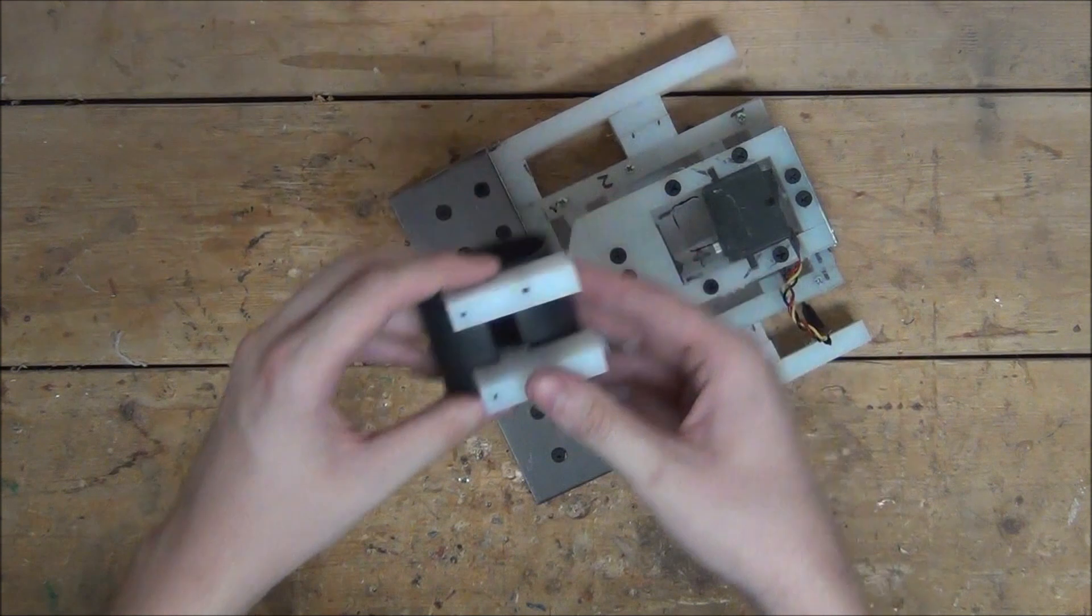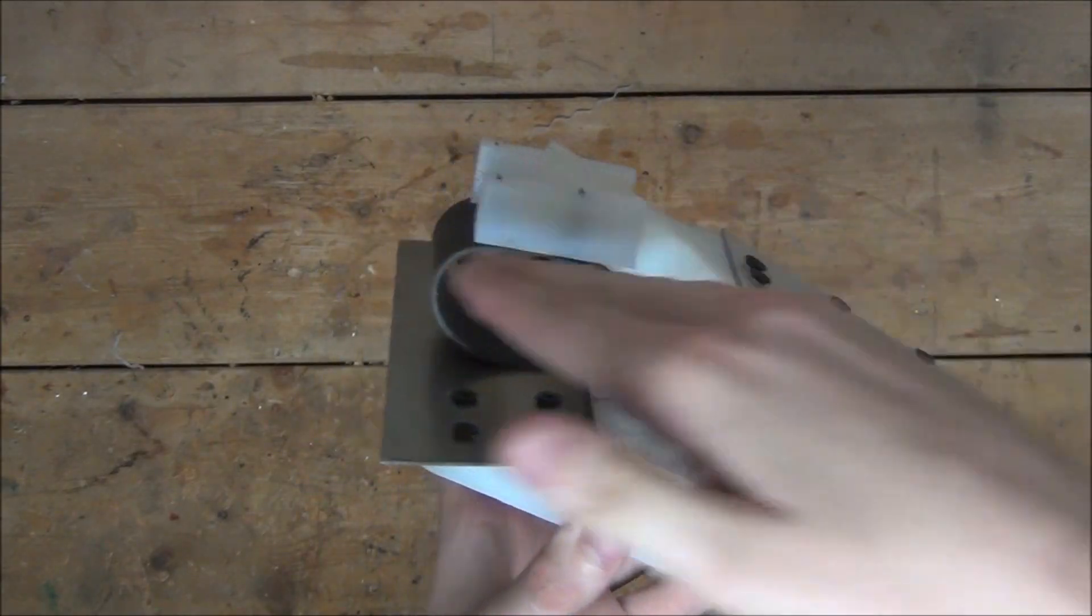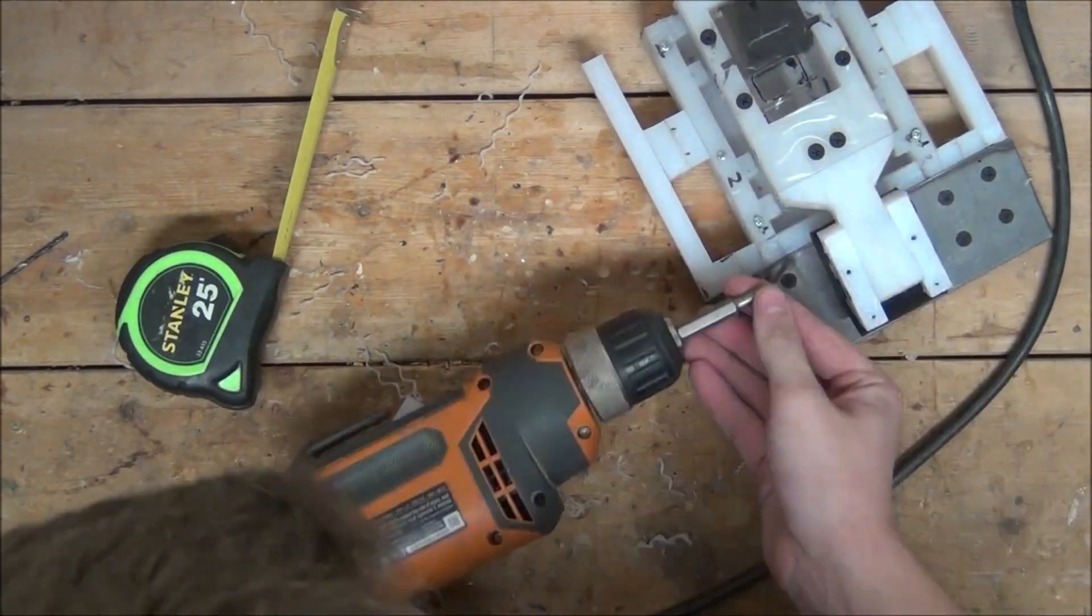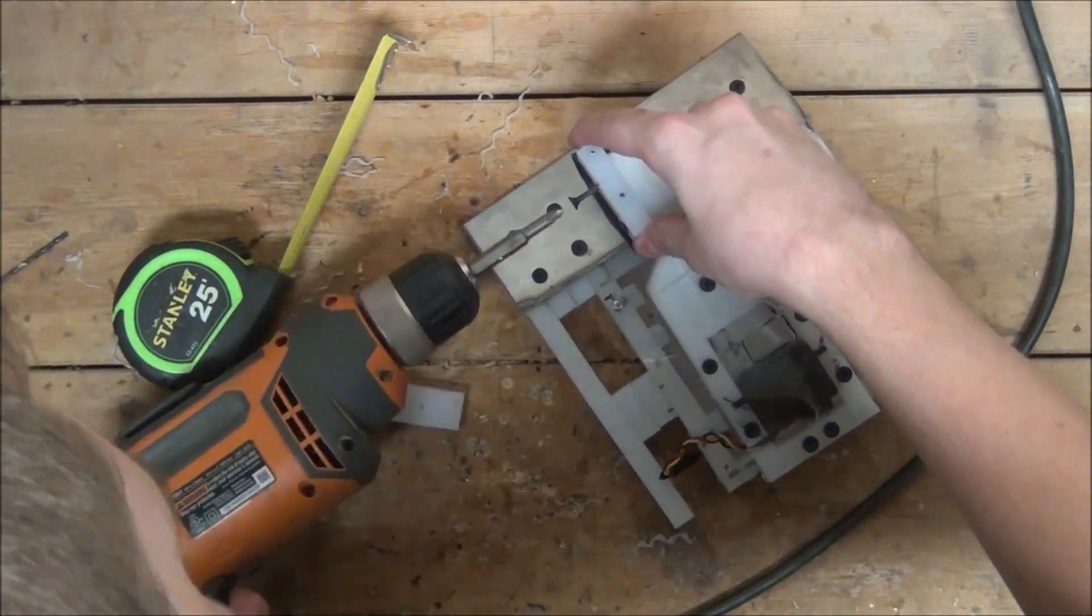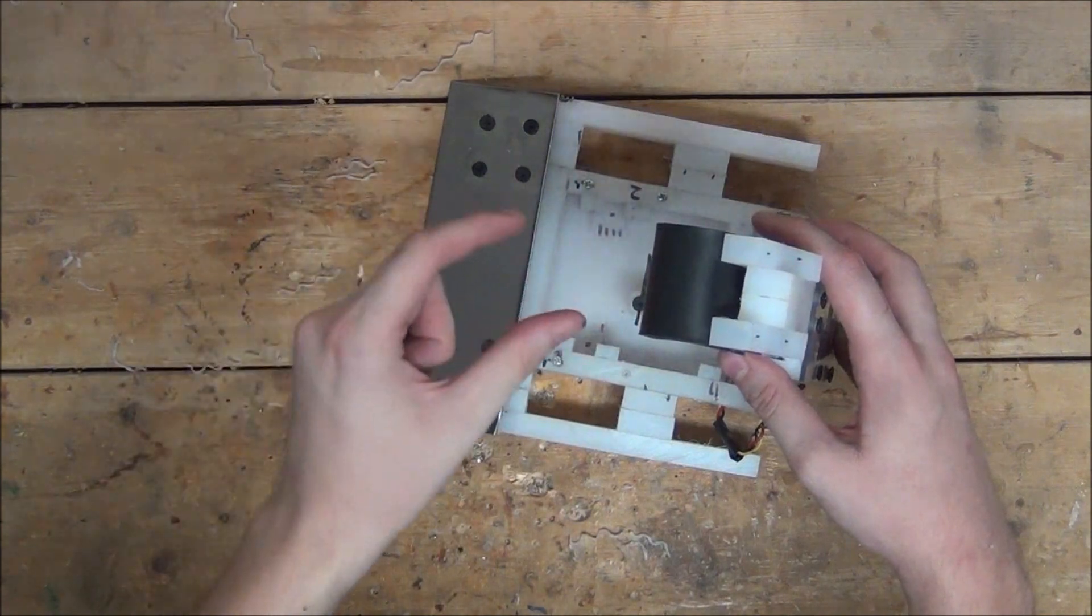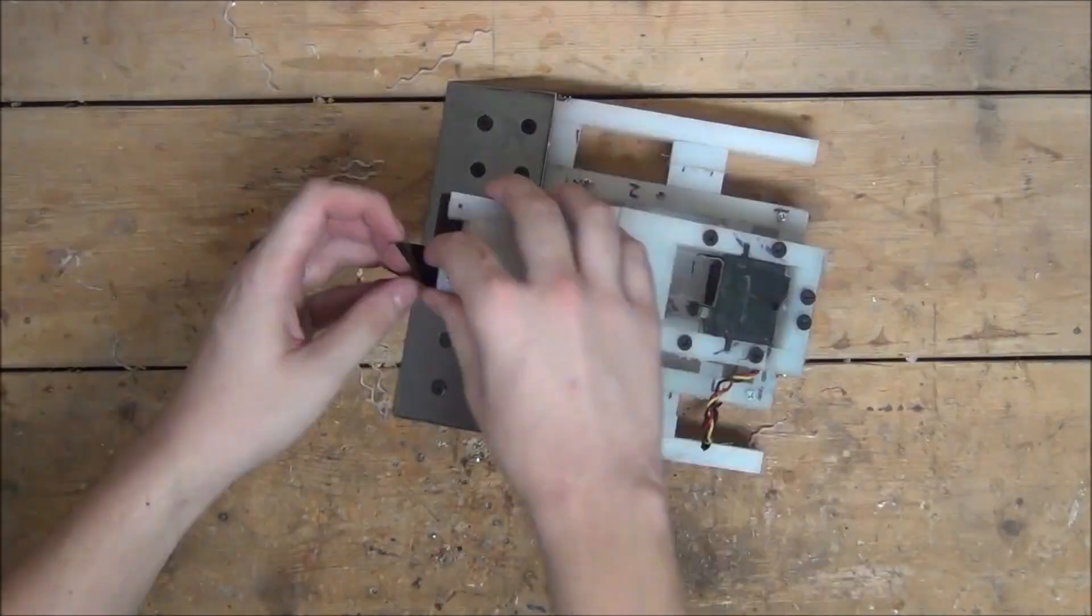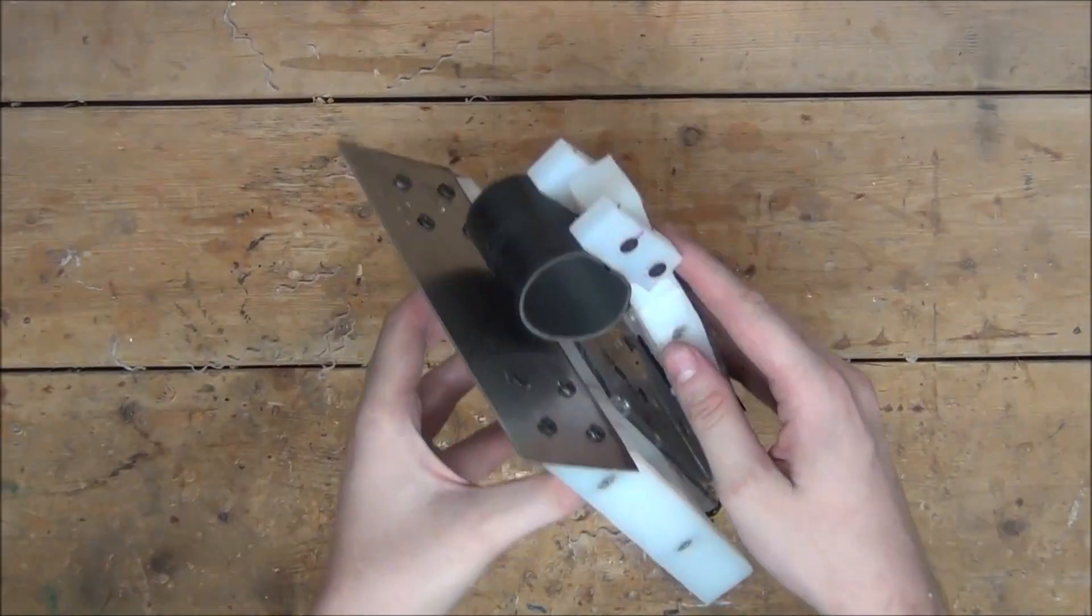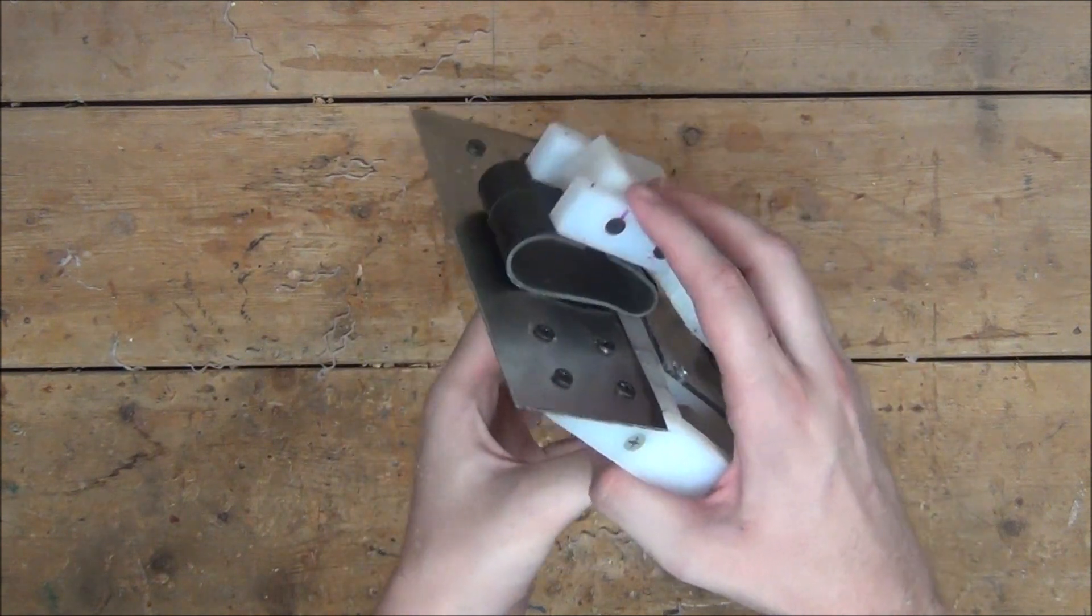Perfect. Now we'll just mount this onto the front of the arm. I'm going to mount mine at a slight angle. Then we'll just wrap the outside of the rubber with a little bit of gripping tape. There we go. That's looking pretty good.